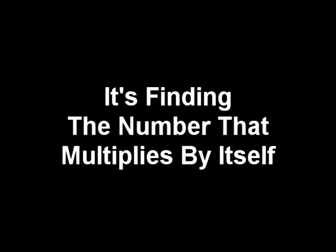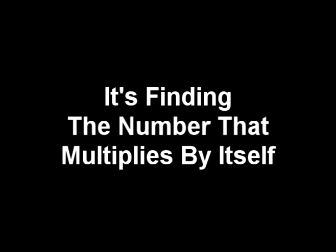Ready? What have you kids learned about numbers today? Squaring something is multiplying it by itself. And when you take the square root of something, it's finding the number that multiplies by itself to find the square root.